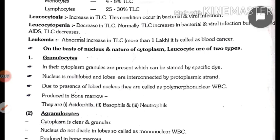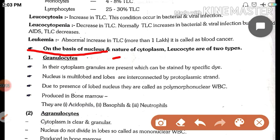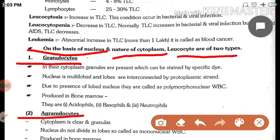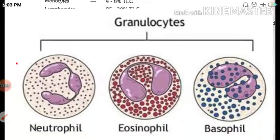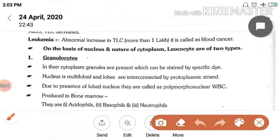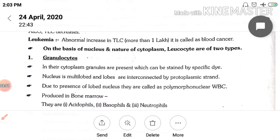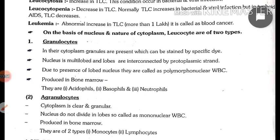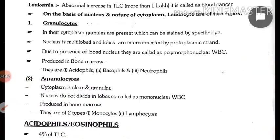Leukocytes do prakar ki hoti hain — ek granulocyte, doosri agranulocyte. Granulocytes ke cytoplasm mein granules present hote hain, which can be stained by specific dye. Nucleus multi-lobed hota hai, and lobes are interconnected by protoplasmic strands. Due to the presence of multiple lobes, nucleus kaisa hoga — they are called polymorphonuclear WBCs.